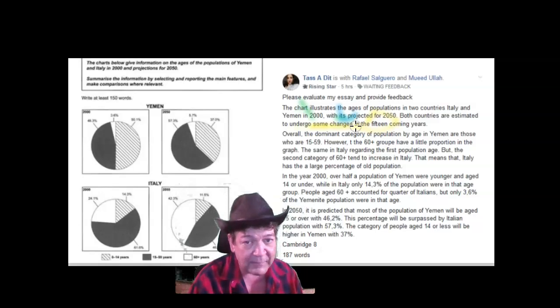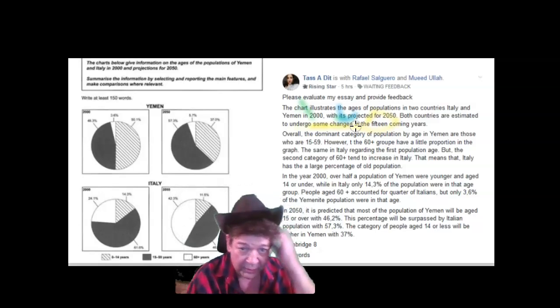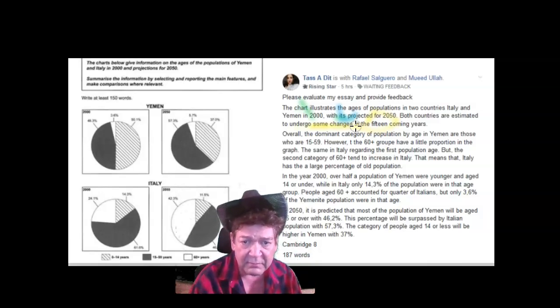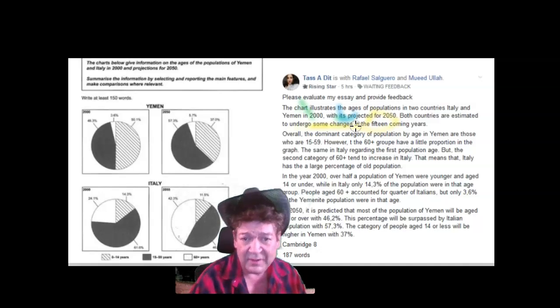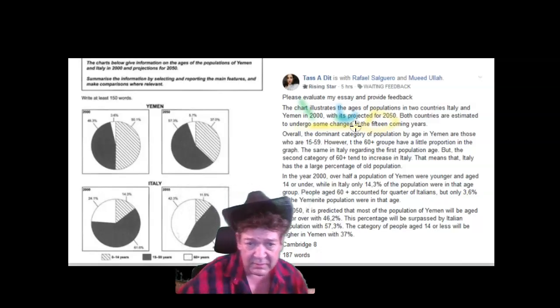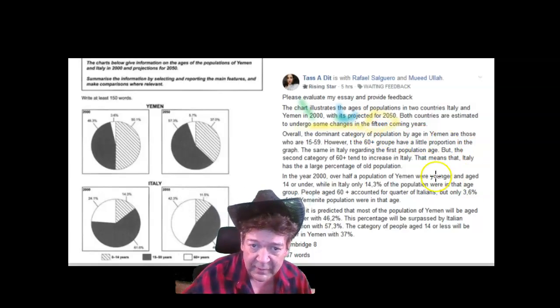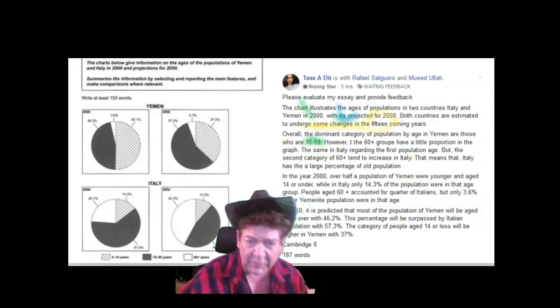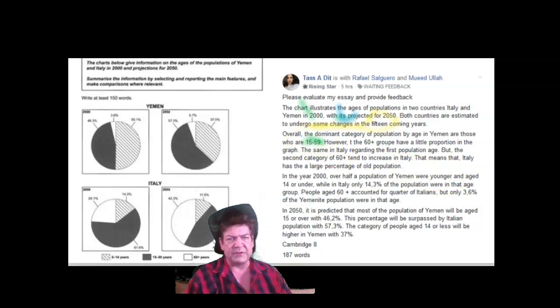Overall, the dominant category of population by age in Yemen are... Category is one thing, right? Is. Category one is those who are 15 to 59. What do you call those people who are between the ages of 15 to 59? The children? Are they the elderly? No. Paraphrase. Adults.